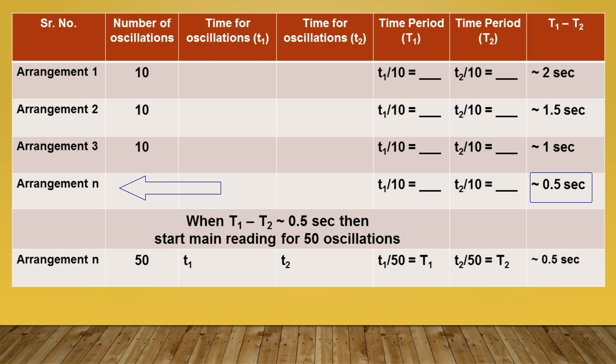And then after doing nth arrangement, we got a time difference of 0.5 second which is ideal for our experiment. Now after getting this arrangement, we are increasing the number of oscillations for more accuracy. So now we are oscillating this Kater pendulum for 50 times at both sides and then calculate the time period of one oscillation in both cases. So in this way, you can make this table containing the readings of Kater's pendulum. Just keep in mind that this final value T1 and T2 will be used in our formula to get the value of acceleration due to gravity.